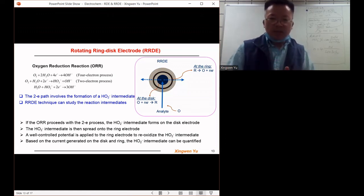With the rotating of the electrode, the intermediate species will be spread out from the disk electrode to the ring electrode.